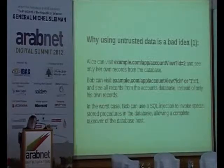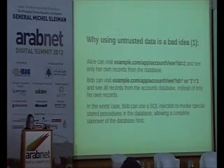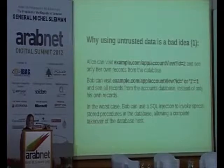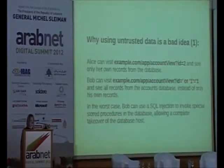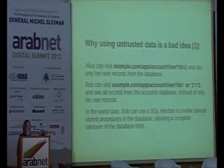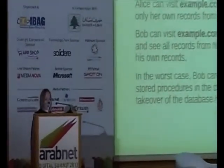Why is this bad? In the first example, Alice visits example.com as a legitimate user. The application expects her to input a number as her ID, and she sees only her own records. In the second example, Bob puts in something like 'or 1=1', which is always true, meaning he sees all records from the database. With SQL injection you can see all records, drop all tables, or even take over the whole host.